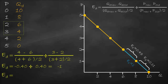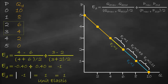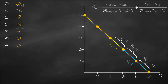Price elasticity of demand equals negative 1. We have a negative sign because of the negative relationship between price and quantity demanded based on the law of demand. Using absolute value gives us 1. Since 1 equals 1, this is unit elastic. Between price 2 and 3, demand is unit elastic — shown in yellow on the graph to distinguish it.